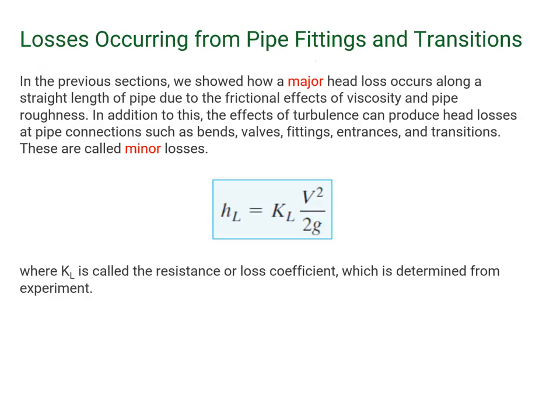In previous sections, we showed how the major head loss occurs along a straight length of pipe due to frictional effects of viscosity and pipe roughness.